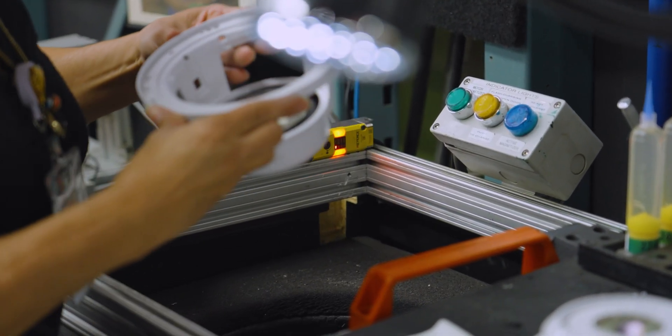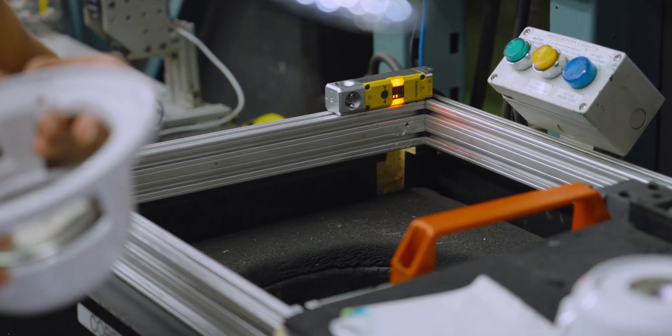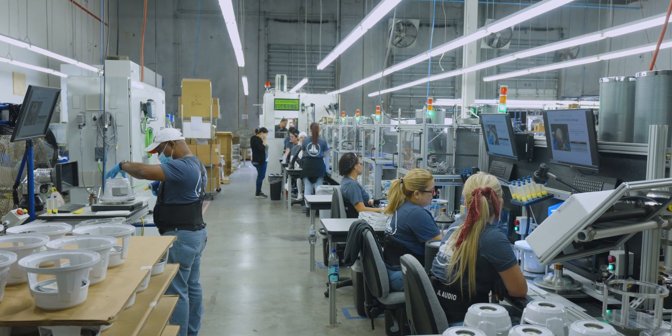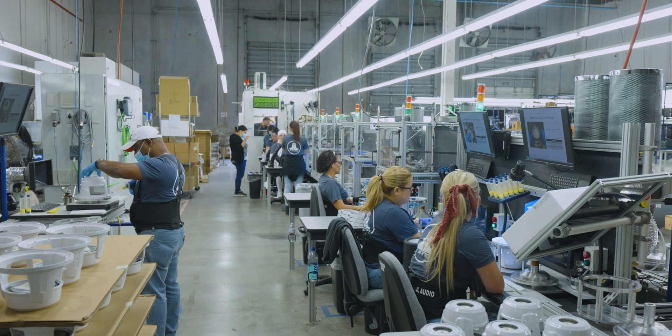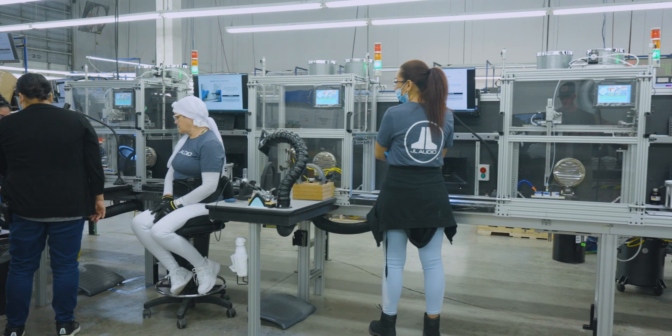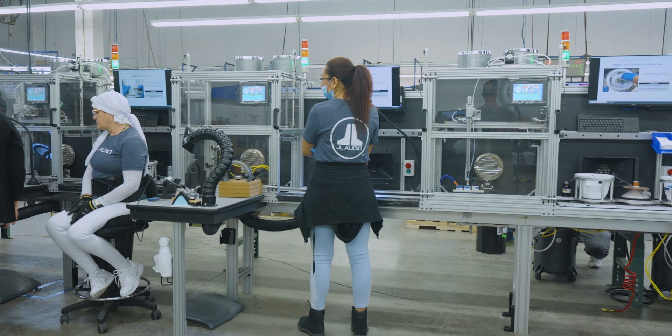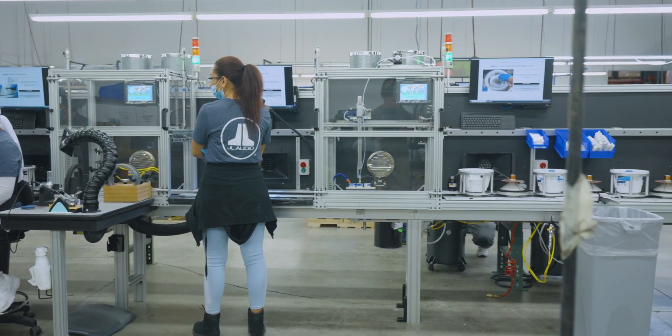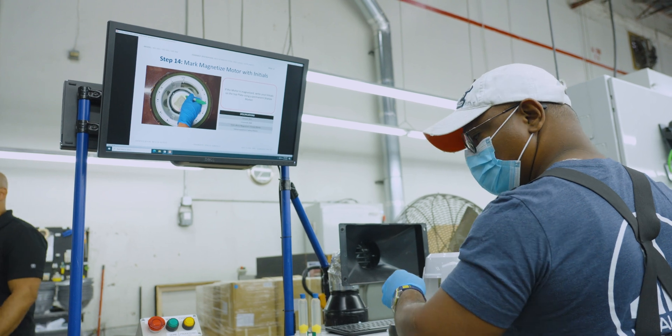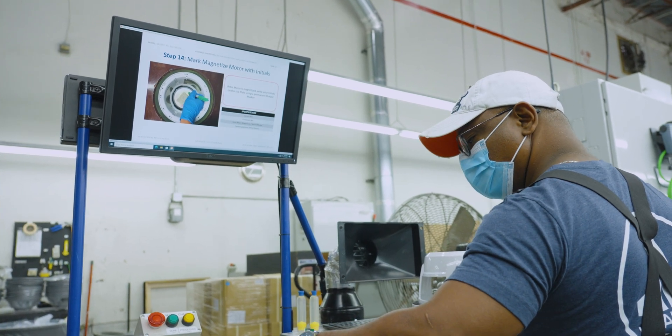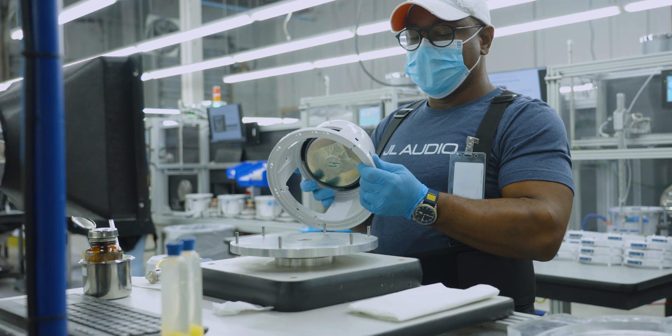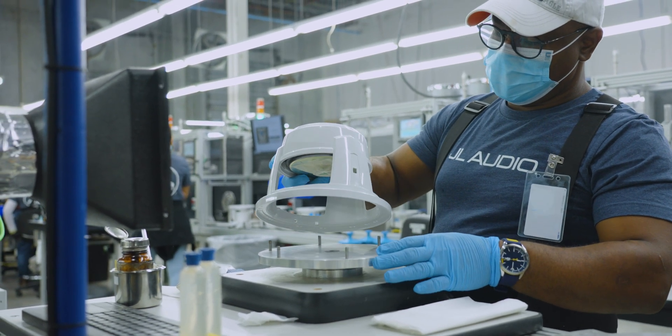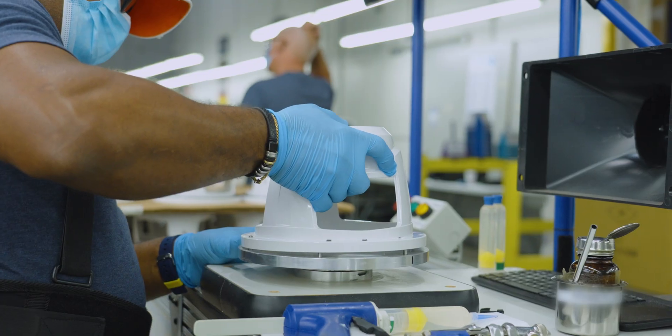The basket is now ready to receive a mounting gasket before being flipped over to receive all of the remaining components that make up the speaker. One thing we noticed during the tour is above every station there is a screen showing the instructions for each process on the line, ensuring each team member follows precise build guidelines set by JL Audio's in-house engineering team. After a quick QC check, the first of many along the line, a special bonding glue is added and the gasket is properly aligned and permanently bonded.